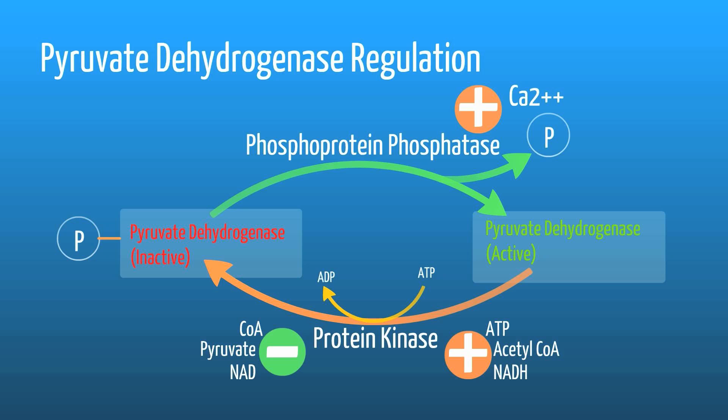Phosphoprotein phosphatase is involved in the removal of a phosphate group from the inactive form of the PDC, leading to its activation. Calcium is a known trigger for increasing the activity of phosphoprotein phosphatase. In muscle, calcium increases in the cell when muscles are actively contracting — so if muscle is doing work, they need more energy, and this signals cells to increase phosphoprotein phosphatase activity so more energy is made.